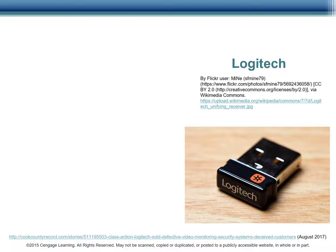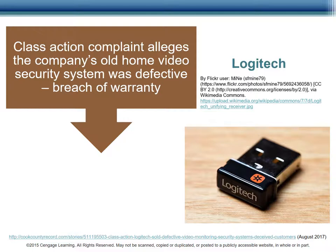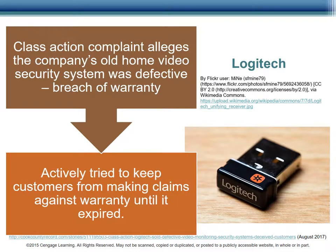Let's turn to a few recent cases involving warranties and liability, all from August 2017. Most cases never go to court and most parties agree not to disclose details. We start with Logitech: a recent class action complaint was made regarding an older home video security system. Customers claim the system is defective and does not do what it said it would do, with written documentation promising more than the system could provide. The plaintiffs also said Logitech made it difficult to get service, claiming parts were backordered and stalled until the warranty expired.